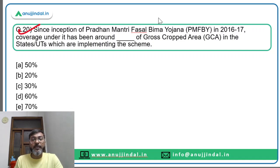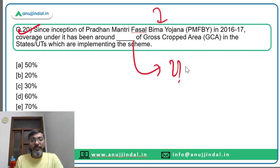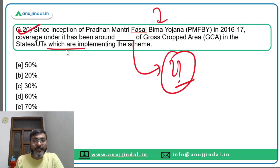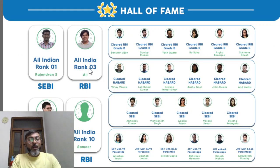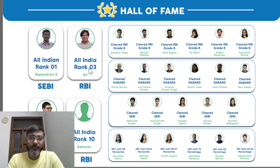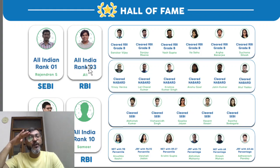Question twenty: since inception of Pradhan Mantri Fasal Bima Yojana in 2016-17, coverage under it has been around what percent of gross cropped area in states or UTs implementing this scheme? The coverage has been around 30 percent of the total gross cropped area. Option C is the correct answer. That's all for today's session — if you have any doubts, ask in the comments. See you next session on Wednesday. Goodbye, take care and God bless.